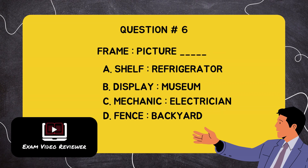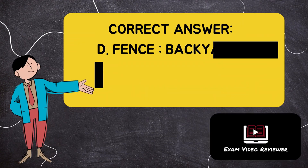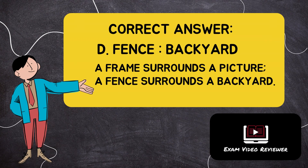Question number six: frame is to picture as blank. Letter A: shelf is to refrigerator, Letter B: display is to museum, Letter C: mechanic is to electrician, Letter D: fence is to backyard. The correct answer is Letter D, fence is to backyard. A frame surrounds a picture; a fence surrounds a backyard.